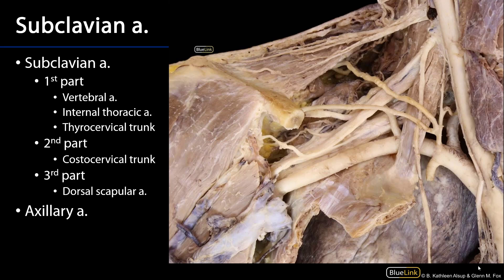The subclavian artery has three distinct parts which can all be found relative to their position to the anterior scalene muscle. The anterior scalene muscle attaches from the transverse processes of cervical vertebrae to the first rib.